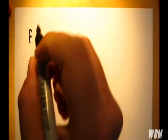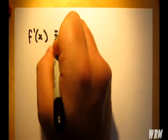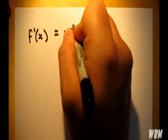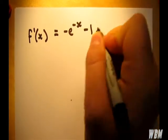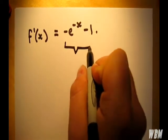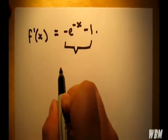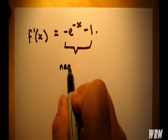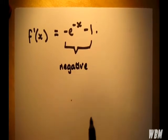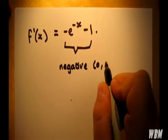To do this, we simply differentiate the function f of x. Now, we need to show that this is negative over the interval between 0 and 2.